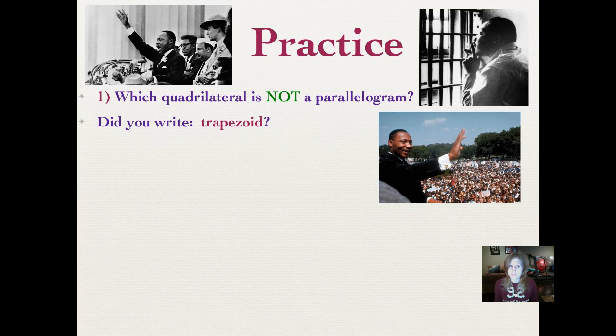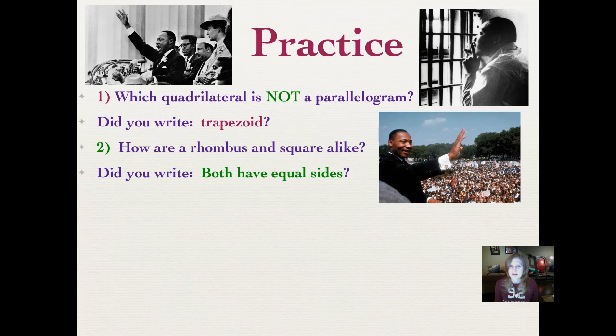Number two: how are a rhombus and square alike? Pause it and push play when you've written it in. Use a complete sentence: a rhombus and square are alike because they... Did you write both have equal sides? Remember, all four sides on a rhombus and a square have the exact same length.